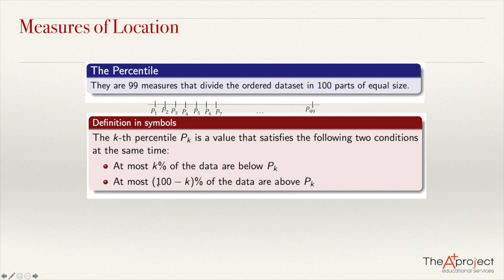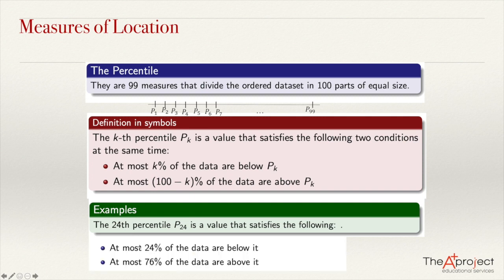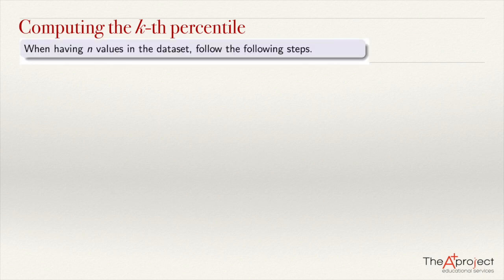For example, if k is 24, then we are speaking about the 24th percentile. That means that at most 24% of the data are below it, and the other 100 minus 24, which is 76%, of the data are above it. Let's find now how to compute any percentile. Imagine that we have a data set with n values.